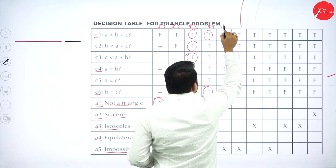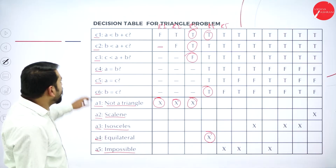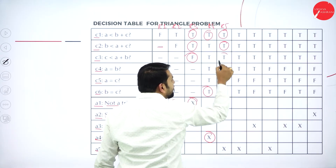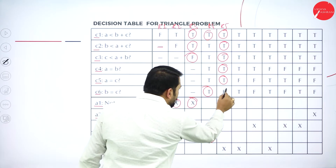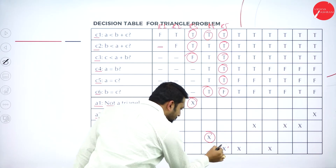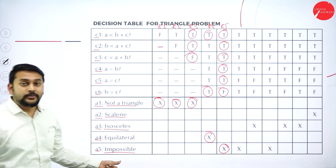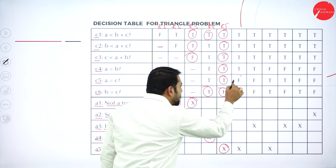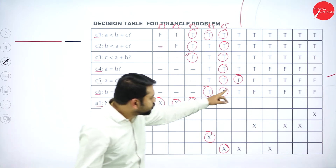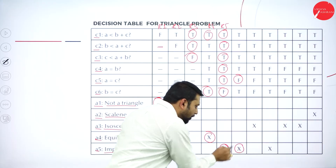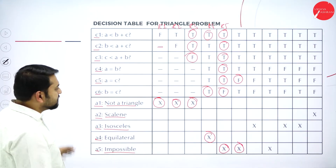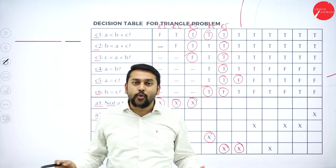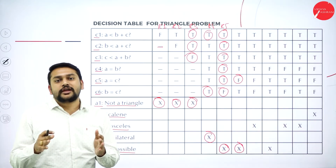For rule five: conditions C1 through C5 are true but C6 is false — the output is impossible. Similarly, if all conditions are true except condition five, the output is also impossible. This is how we verify all the different rules in the decision table for the triangle problem.